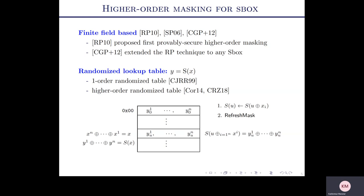Rivain and Prouff proposed the first provably secure S-box scheme for higher-order masking, based on finite fields. There are many other works that implemented secure masking for AES S-box, DES S-box, and so on. Another approach is based on the randomized lookup table. The first-order randomized lookup table construction was proposed by Chari et al., and later Coron generalized it to higher-order randomized tables.